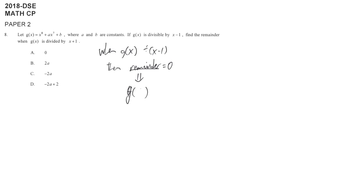In this case, they mean 1. When x is 1, the divisor becomes 0. So they're telling you that g(1) is 0. What's being asked is the remainder when g(x) is not divided by the same divisor, but divided by x plus 1. So what's the remainder?